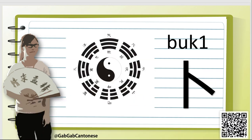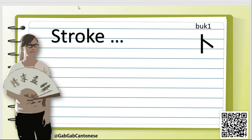For this character, we pronounce it as 卜. Do you know what 卜 is? It is not a book. But 卜 can tell you what your future is — it means fortune telling.